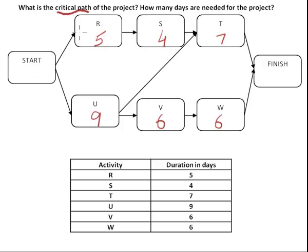First one is start, R, S, T and finish. And what's the second path? It's start, U, T and finish. And the third path is start, U, V, W and finish.